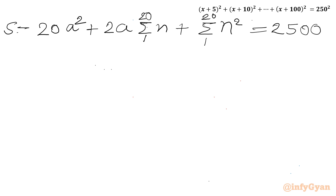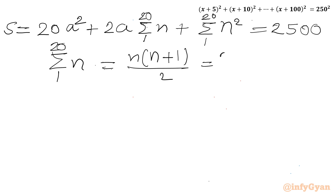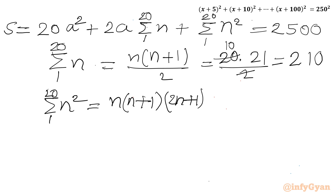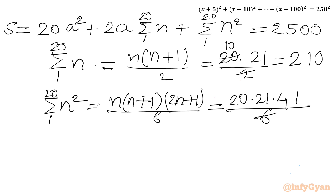Let us find Σn and Σn². Our equation is 20a² + 2a·Σn + Σn² = 2500. Using the formula Σn = n(n+1)/2, for n=20: 20×21/2 = 210. For Σn² = n(n+1)(2n+1)/6, for n=20: 20×21×41/6 = 2870.